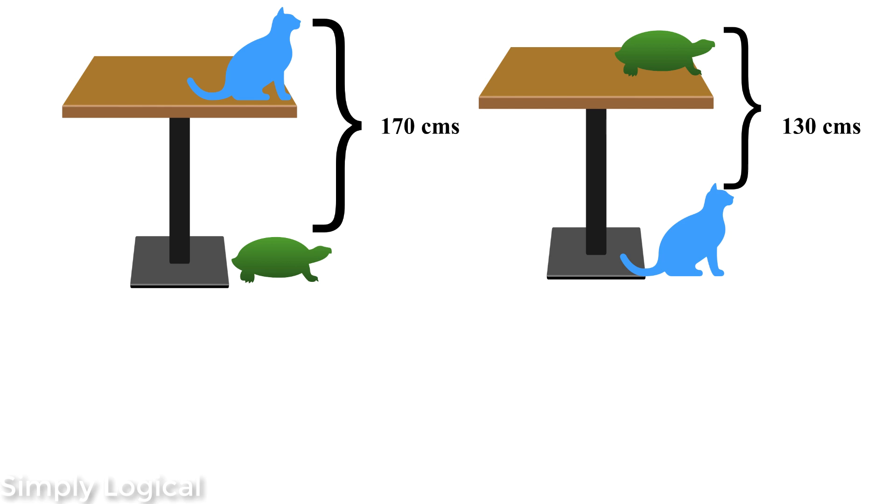If you observe the diagram, there are three important components: table, cat, and tortoise. Let's assume that height of the table is T, height of cat is C, and height of tortoise is R.